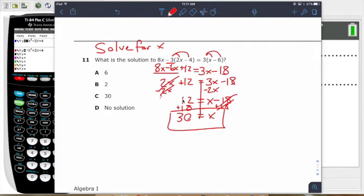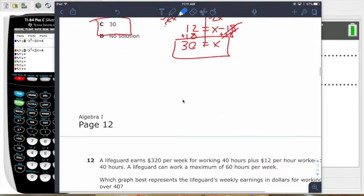So that means your answer is C. Now, I bet you some of those other options, maybe if you forget to distribute, or maybe you don't distribute the negative, you might get one of those other options. So be very careful. I think that's the biggest error right there is that plus 12. A lot of people want to put minus 12, so be really careful on that.